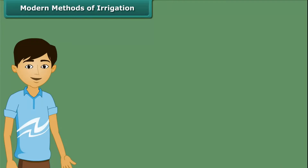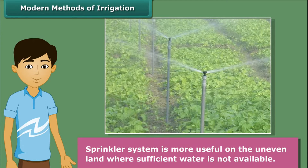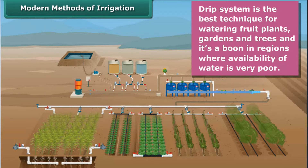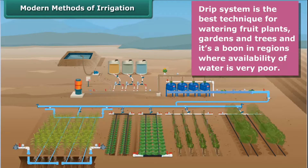Let us now know modern methods of irrigation. The first is a sprinkler system, which is most useful on uneven land where sufficient water is not available. In this system, perpendicular pipes having rotating nozzles on top are joined to the main pipeline at regular intervals. When water flows through the main pipe under pressure, it escapes from the rotating nozzles and gets sprinkled on the crop as if it is raining. The second is a drip system, where water falls drop by drop just at the position of the root. It is the best technique for watering fruit plants, gardens, and trees, and is a boon in regions where availability of water is very poor.